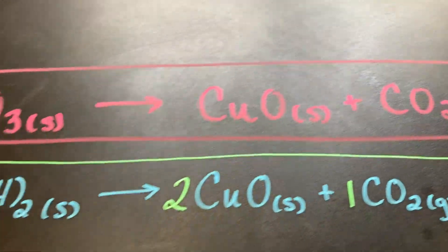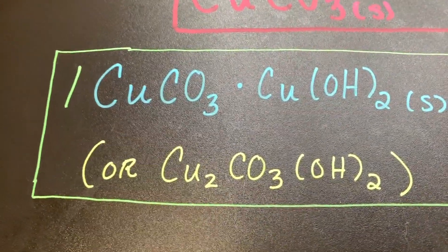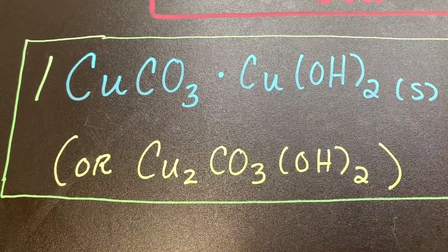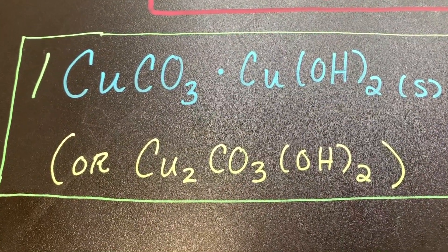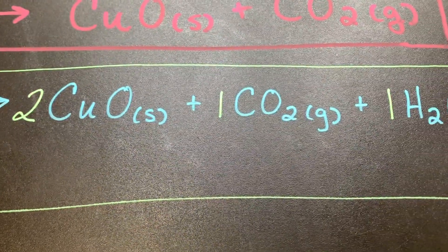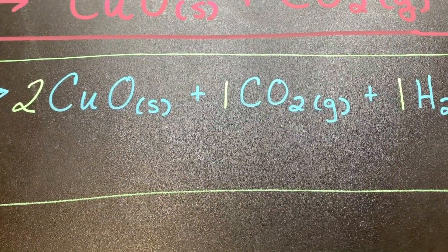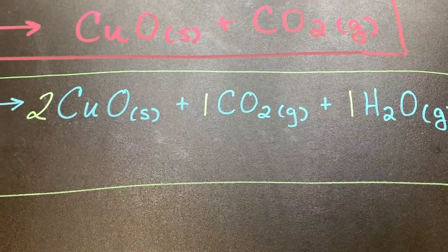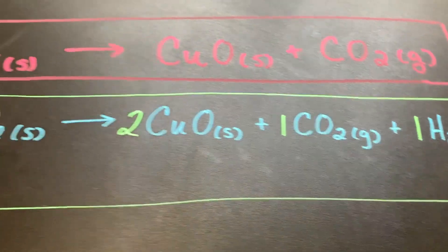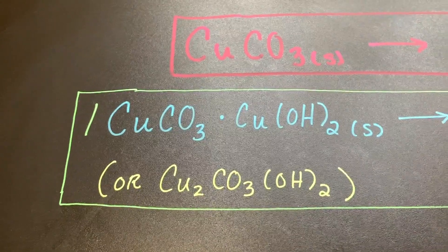Because we're collecting mass data and calculating percent yield, we need the correct formula, which is copper two carbonate hydroxide. It's going to produce two moles of copper two oxide solid, one mole of carbon dioxide gas, and one mole of water from the original one mole that we started with.